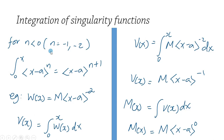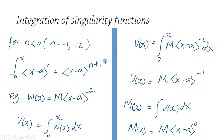For n less than zero — for example if n equals negative one or negative two, as in the case of a unit doublet — we integrate from zero to x of the singularity bracket (x minus a) to the power n, and the result is simply (x minus a) to the power n plus one. That is the rule for n less than zero.